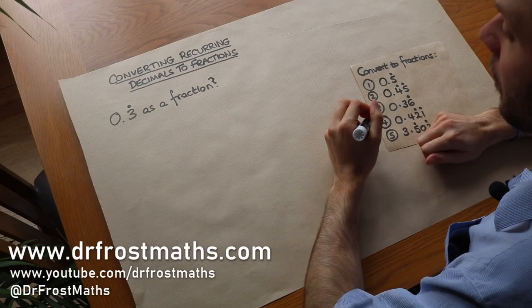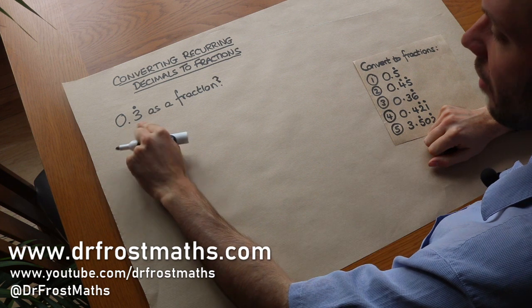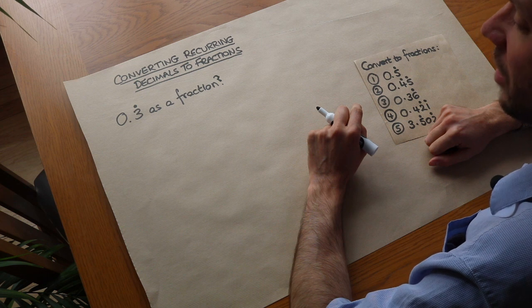Hello and welcome to this video on converting recurring decimals to fractions. So let's just say we had a recurring decimal like this 0.3 recurring and we want to convert that to a fraction.